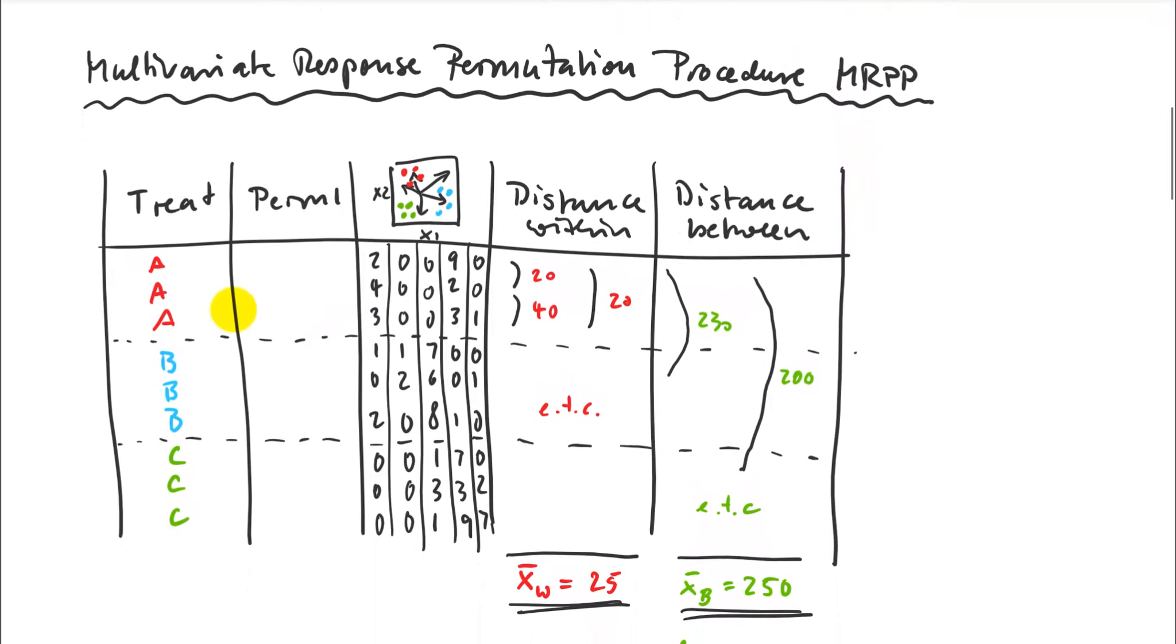If you think of how your data table looks like in such an experiment, I would have different treatments, different rows with observations. Instead of having one variable, I have many variables. Let's say these are all different species - we have five different species here. We calculate the frequencies.